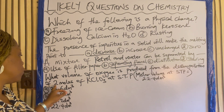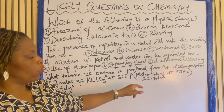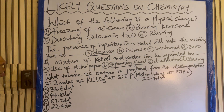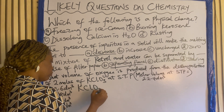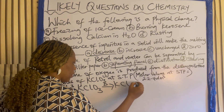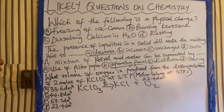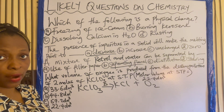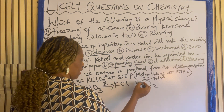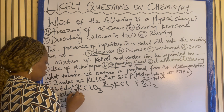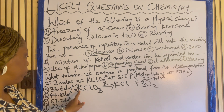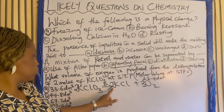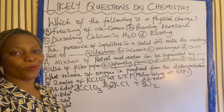What volume of oxygen is produced from the decomposition of 2 moles of potassium trioxochlorate(V) at STP? Molar volume at STP equals 22.4 dm³. We write out potassium trioxochlorate(V); when you decompose it, you have potassium chloride plus oxygen. Balance the equation: K is 1 and 1, Cl is 1 and 1, O is 3 and 2 — not balanced. Adding 3 to O₂ gives 6, and adding 2 to KClO₃ gives 6 oxygen. So: 2KClO₃ → 2KCl + 3O₂. The equation is balanced.